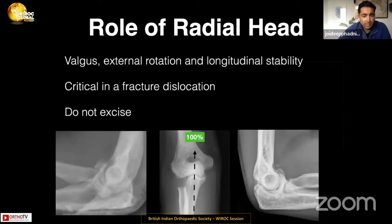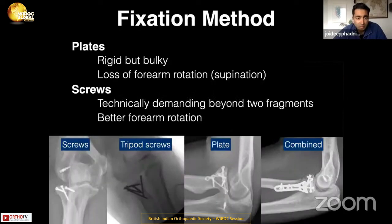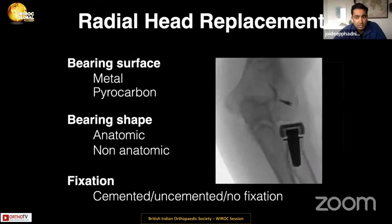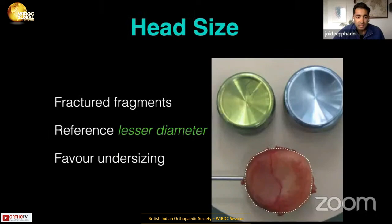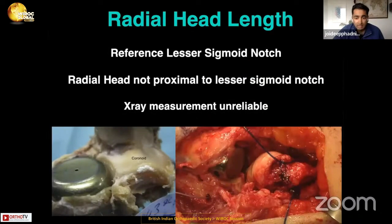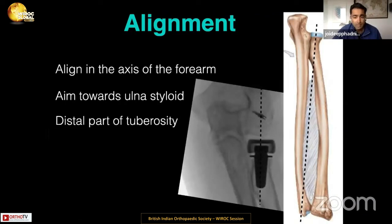Anand's already discussed the role of the radial head, but it's important not to excise the radial head in a fracture dislocation, as this alters elbow loading and results in earlier onset arthritis. For radial head replacement, the critical point is correct sizing and length. Use the lesser diameter of the radial head — remember, the radial head is oval, not round — to prevent overstuffing. For length, reference the lesser sigmoid notch intraoperatively; the radial head should not be proud of this, as x-ray measurements are unreliable.